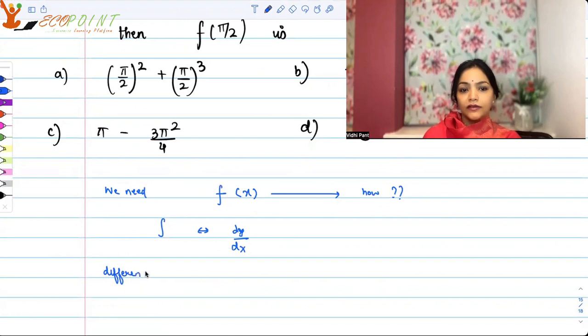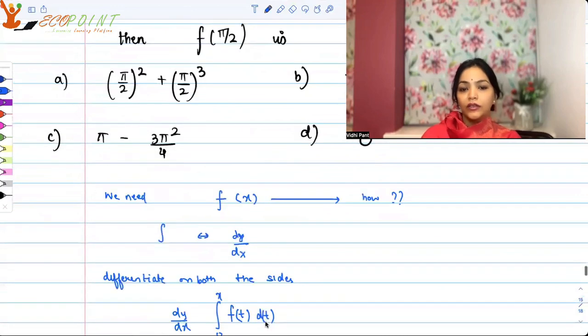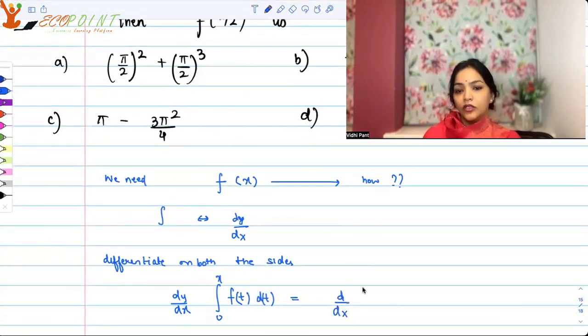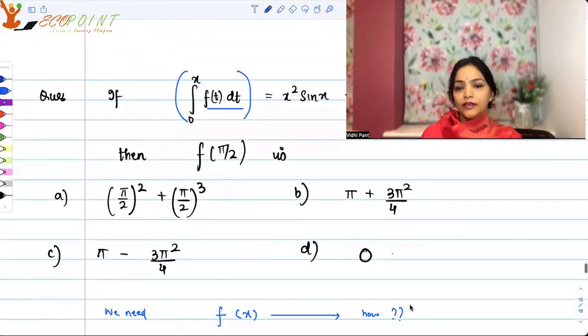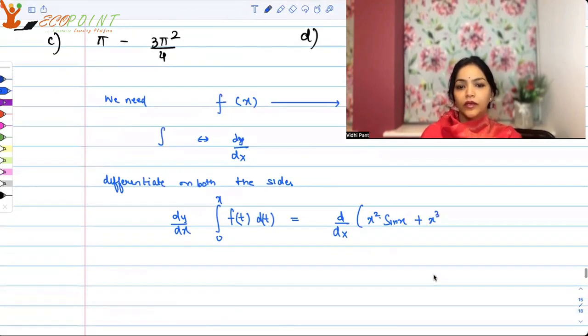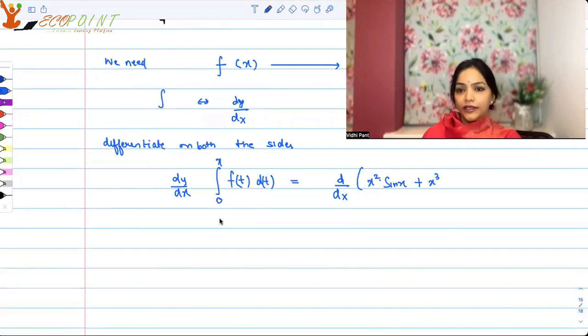So what we will do, we will differentiate on both the sides. As you do that, that means what you're doing is dy by dx of integral 0 to x ft dt. Right? That's what we're doing. And on the other side, also we have to differentiate the function given to us there, which is x square sine x plus x cube. So when you will differentiate this integral, what will you get? You will actually just end up with fx. This is Leibniz rule. You should actually go back and recall, revise what is Leibniz rule. So basically, you are differentiating an integral. And this integral, for this integral, one of the bounds is zero, which is a constant.